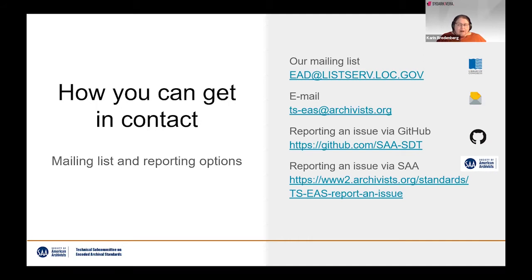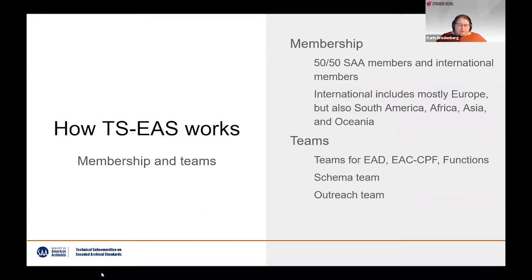We have an email address where you send to one address and it will be forwarded to the correct person, which also means you can use languages other than English. We cover many languages across the whole technical subcommittee. If you have an issue with our EIS standards, you can report it through GitHub — that requires an account. If you don't have one, we have a form on the SAA web page where you can report an issue, and we will register it in GitHub because we track all issues there.